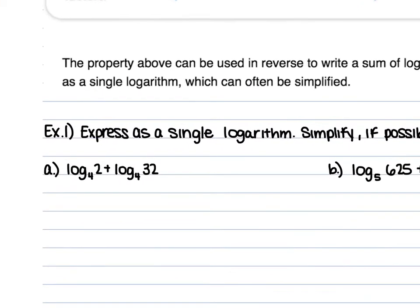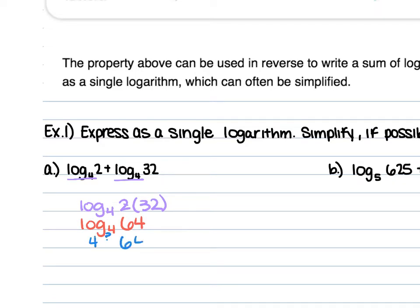For example 1a, we have log₄ of 2 plus log₄ of 32. You're going to keep the log₄ and multiply the 2 times the 32, giving us log₄ of 64. Now think: 4 to what power is 64? 4 to the third power is 64, so our answer is 3.